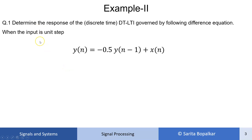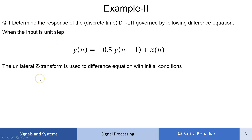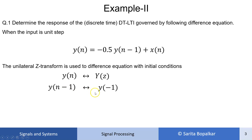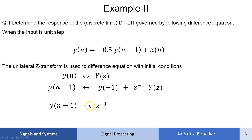The input x(n) is given as a unit step u(n). When no initial conditions are given, check the Z-transform. In general, when there are initial conditions, the Z-transform of y(n-1) is y(-1) + z⁻¹·Y(z). But since y(-1) is not given here — it is zero — the Z-transform of y(n-1) simplifies to z⁻¹·Y(z).